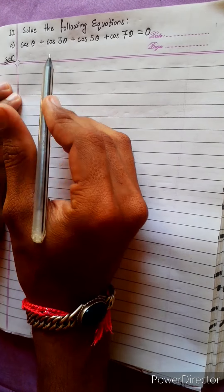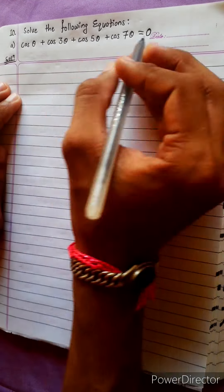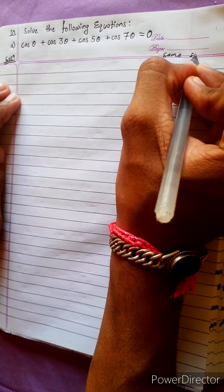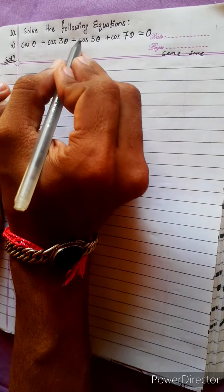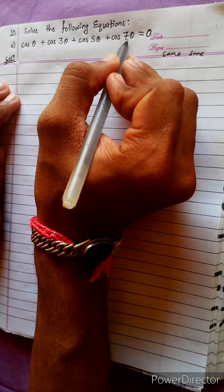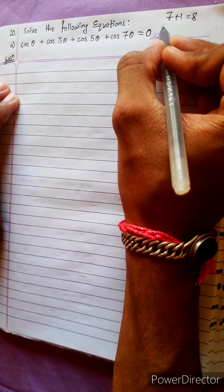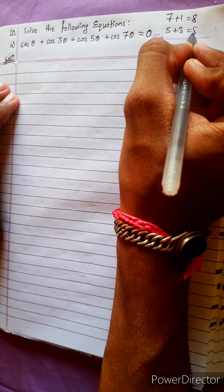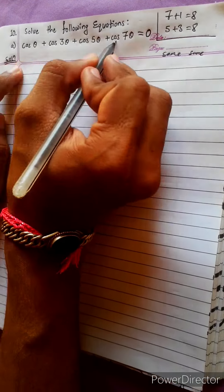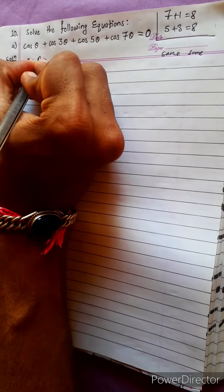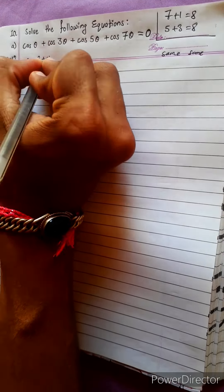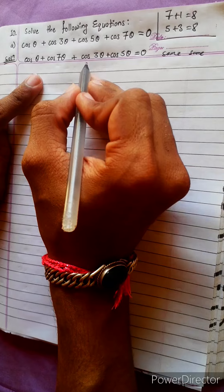Solve the following equation: cos θ + cos 7θ + cos 3θ + cos 5θ = 0. This is equal to 0.